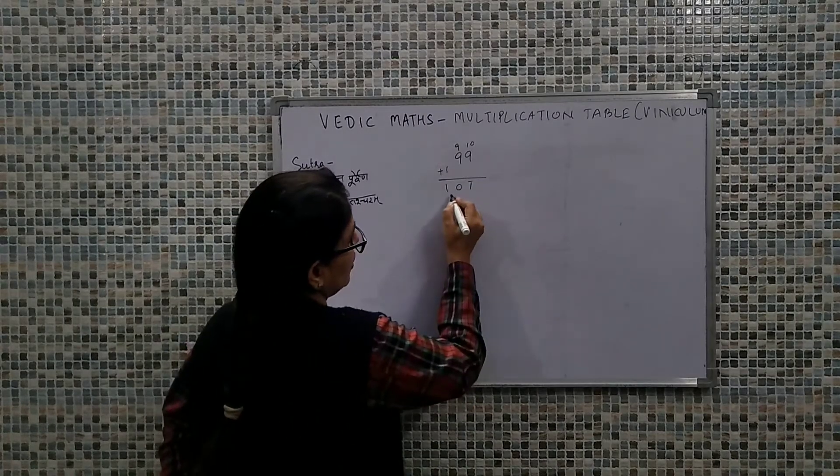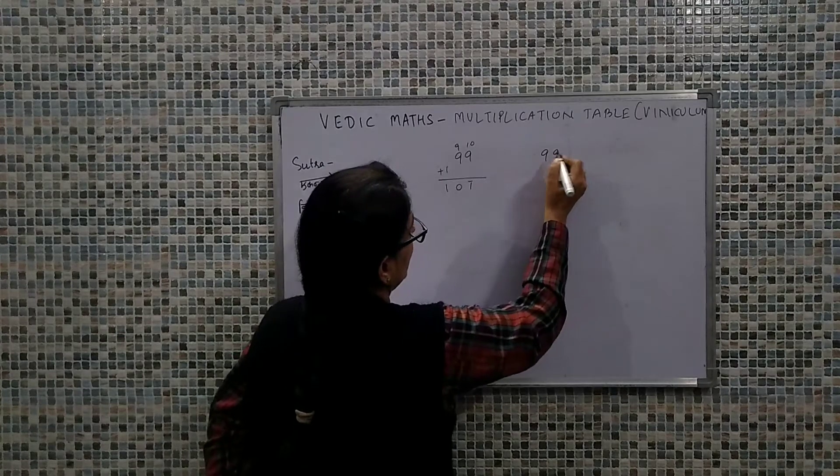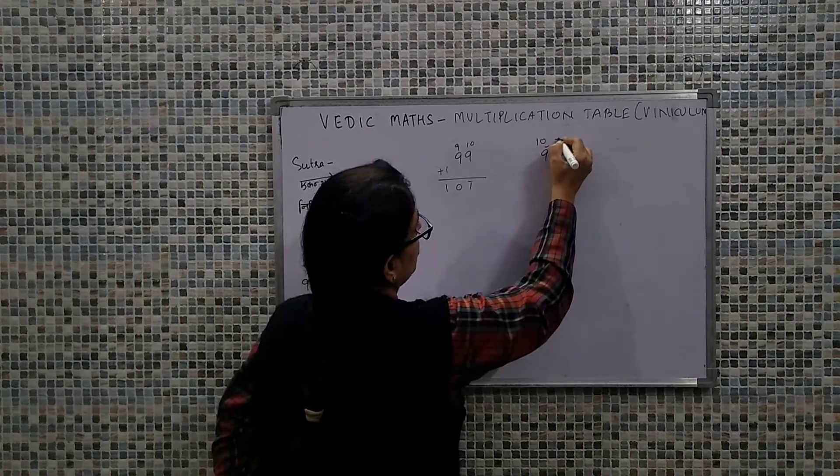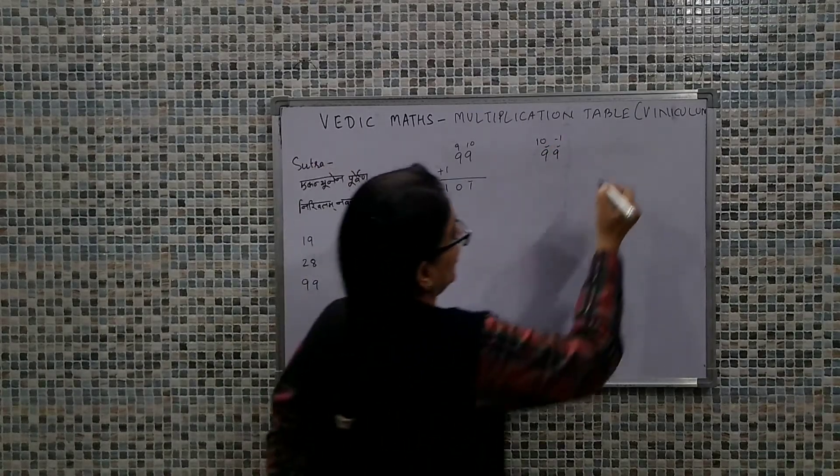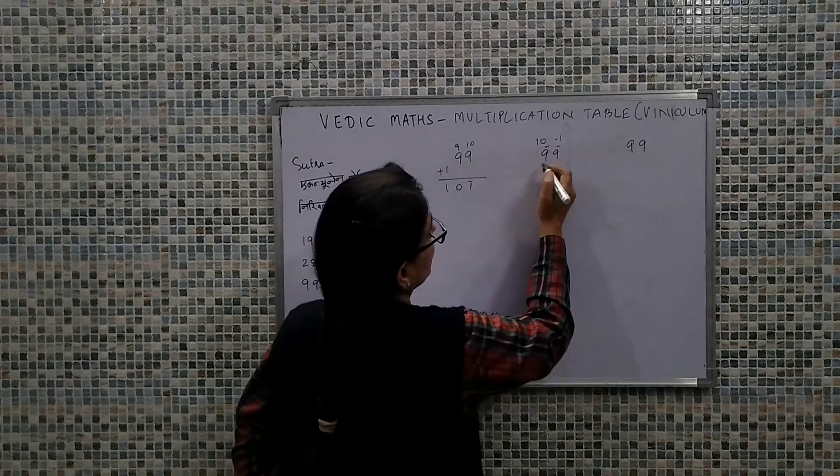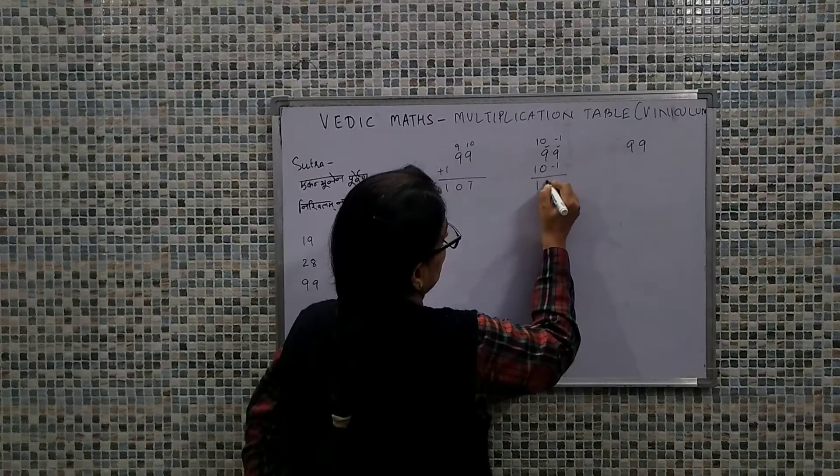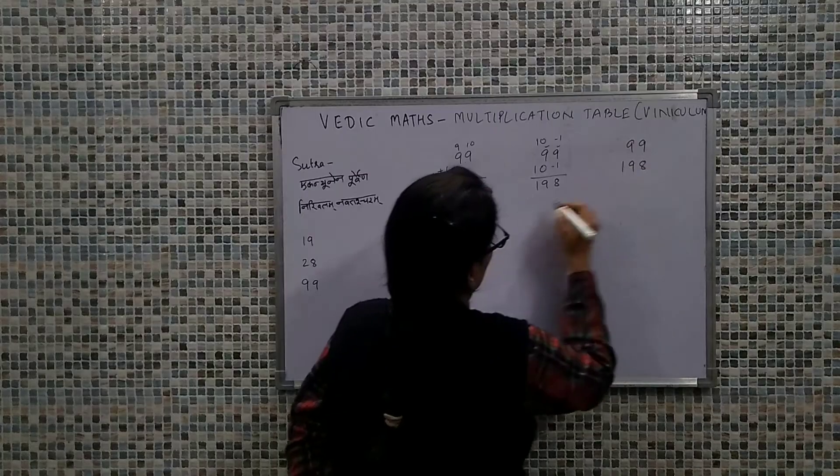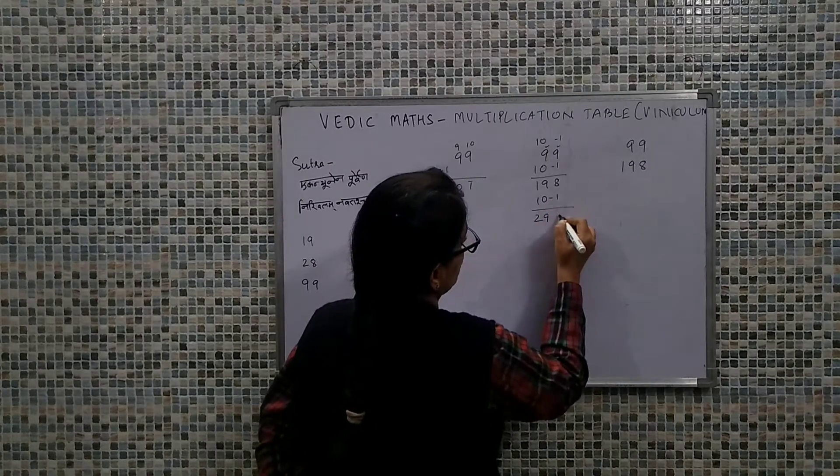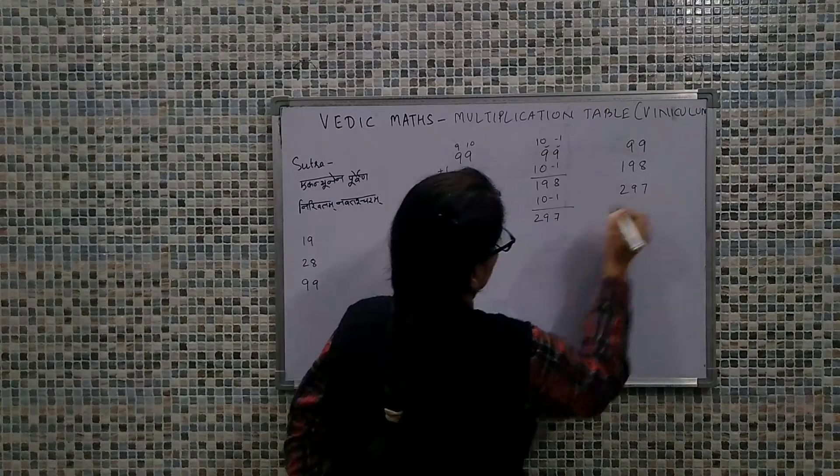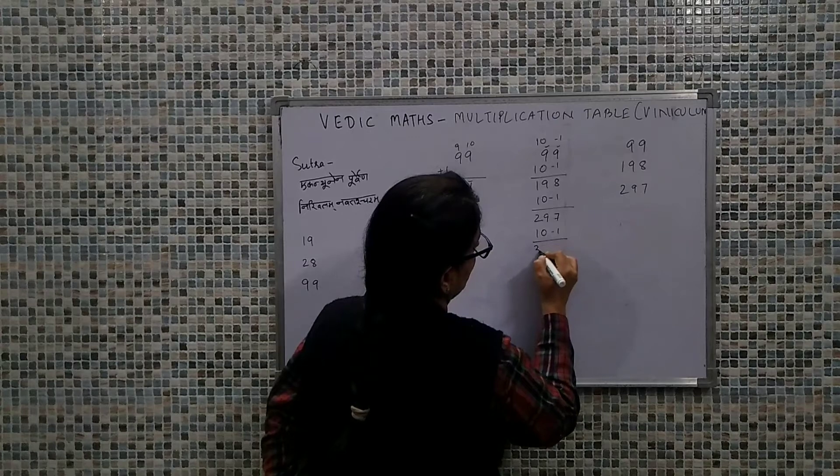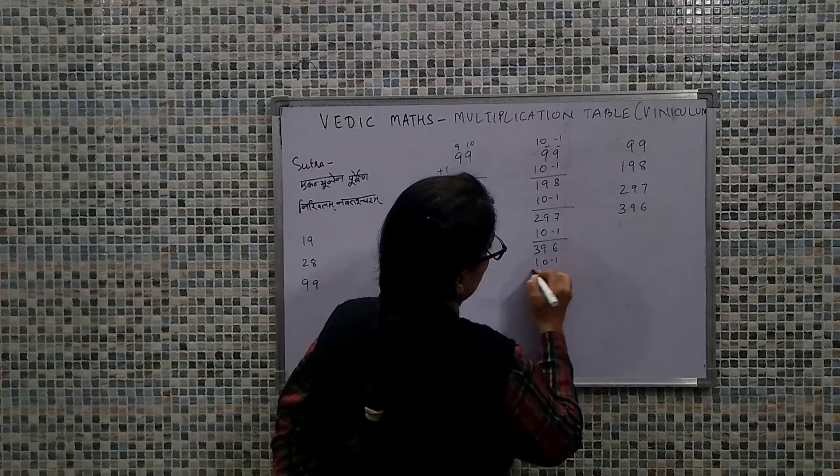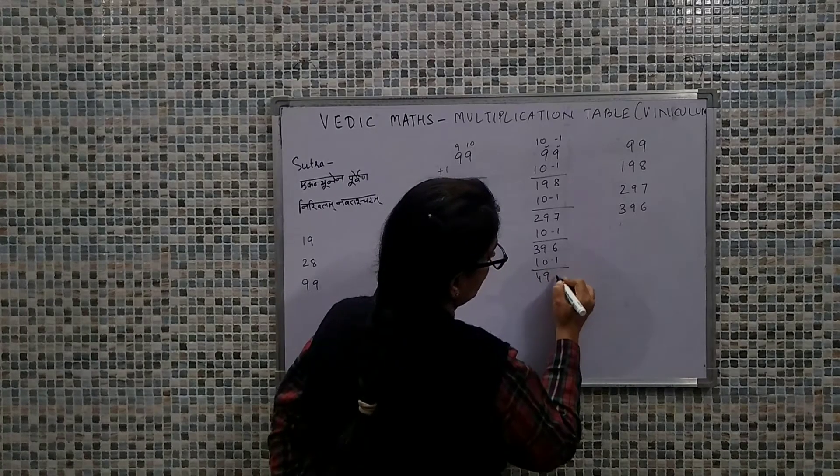So this will be 1 bar 0 bar: 9 minus 9 is 0, 10 minus 9 is 1. This is the number. So what does it mean? This means if we have written 99, this value we will do plus 10 and this value, the ones place value, we will do minus 1. So this is how we are going to write the answer. Plus 10 minus 1: 9 plus 10 is 19, 9 minus 1 is 8, so that is 198. Plus 10 minus 1, that's 297. Plus 10 minus 1, that's 396. Plus 10 minus 1: 6 plus 10, 6 minus 1 is 5, that's 495.